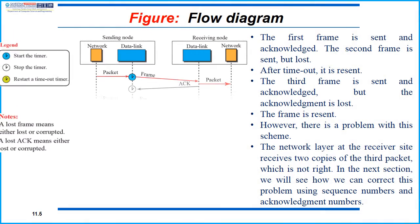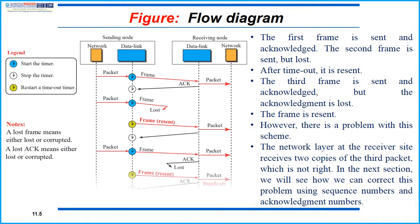Now we will see the working of stop and wait protocol with the help of a flow diagram. In this diagram we can see that the first frame is sent and it got acknowledged. The second frame is sent but it got lost; after timeout it is again resent. The third frame is sent and acknowledged but the acknowledgement is lost, so the frame is again resent. However, there is a problem with this scheme — the network layer at the receiver side receives two copies of the third packet, which is not right.